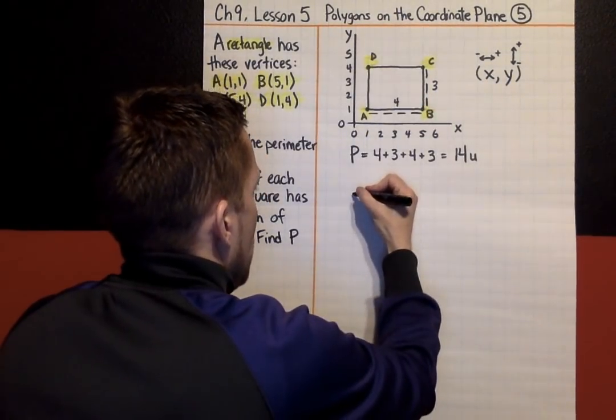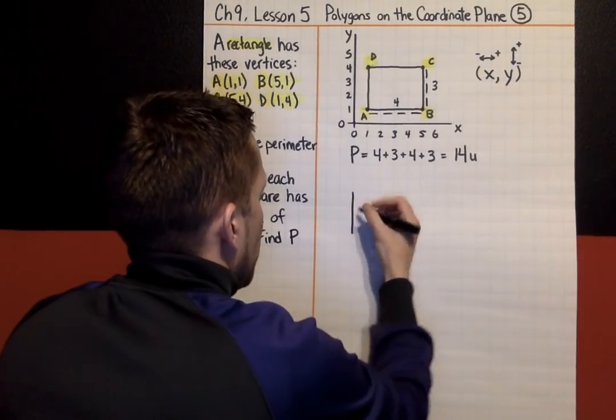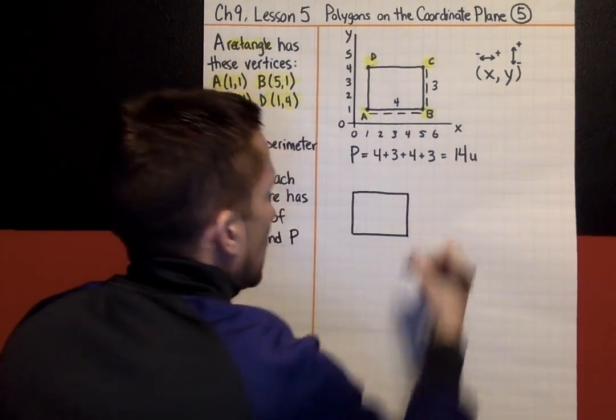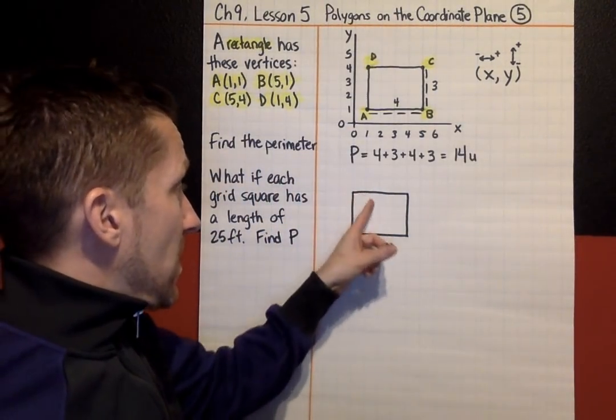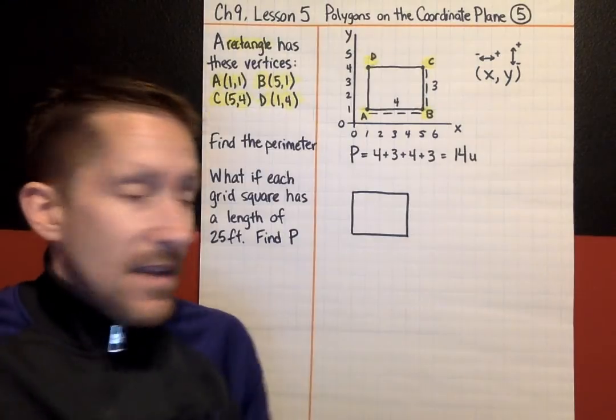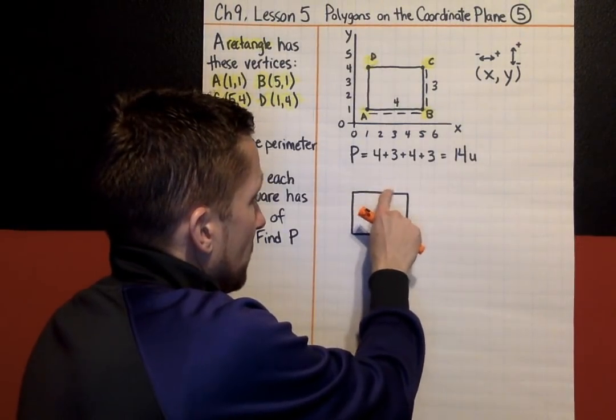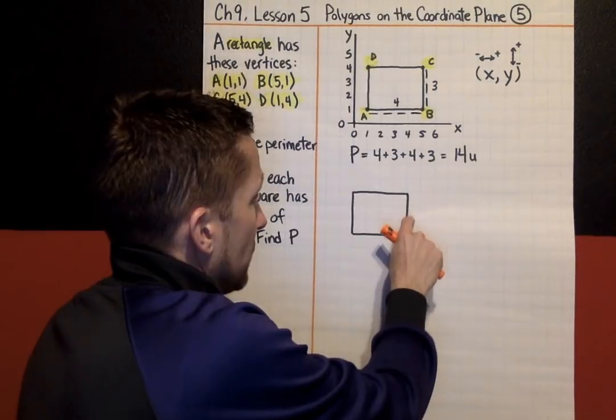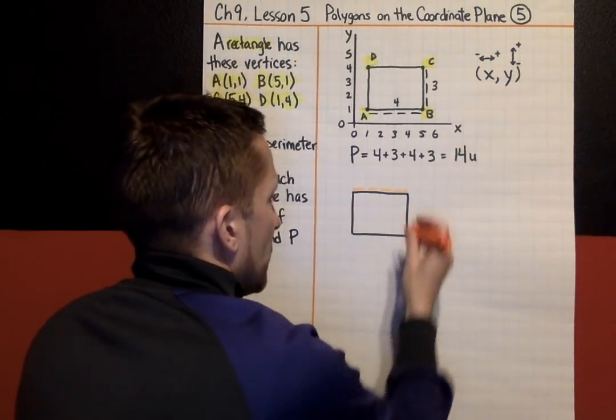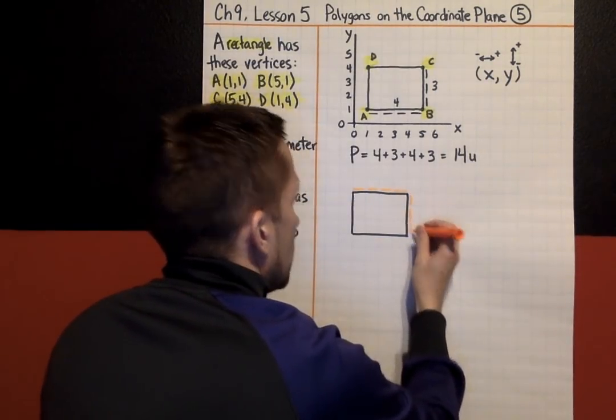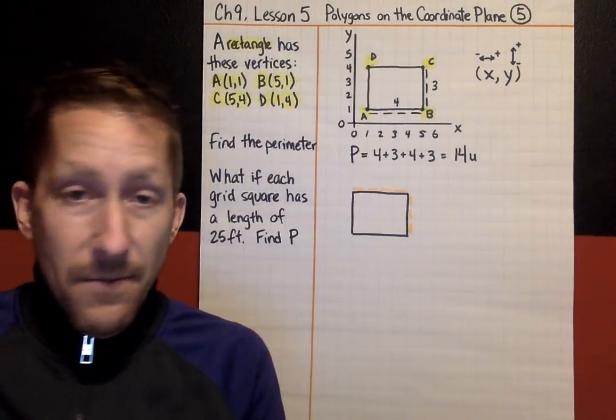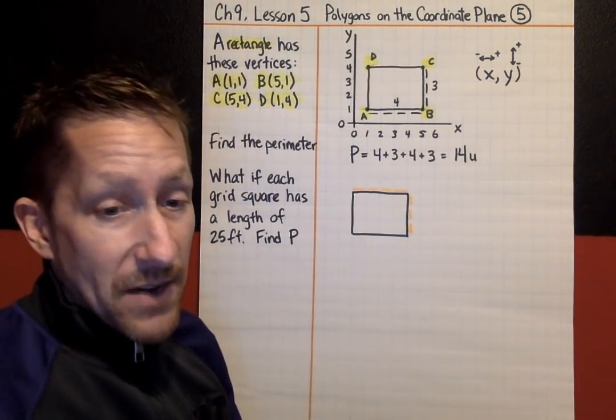What if each grid square has a length of 25 feet? And I'm going to look at that same rectangle. So, it was 3 by 4, so I'm going to draw it right here. It's telling me now that each grid square has a length of 25 feet. What that's telling me is that this is 25, this is 25, 25, 25, 25, 25, 25. Each of these represents 25 feet.